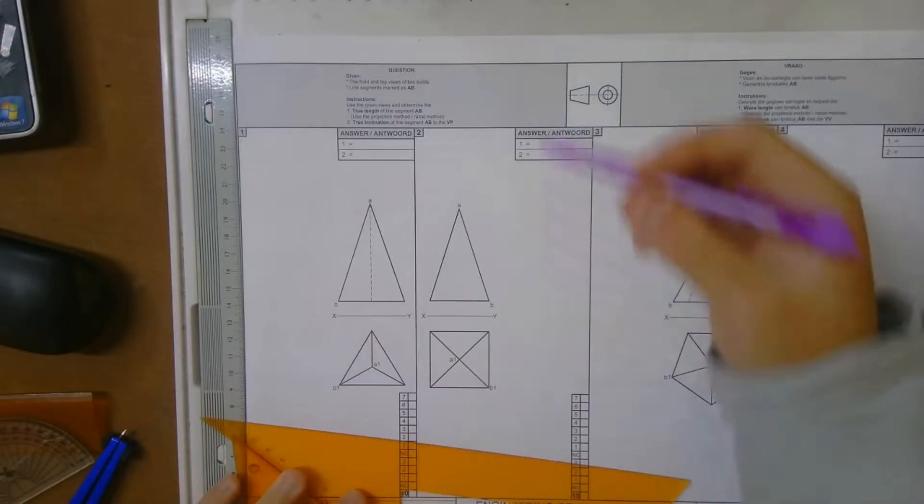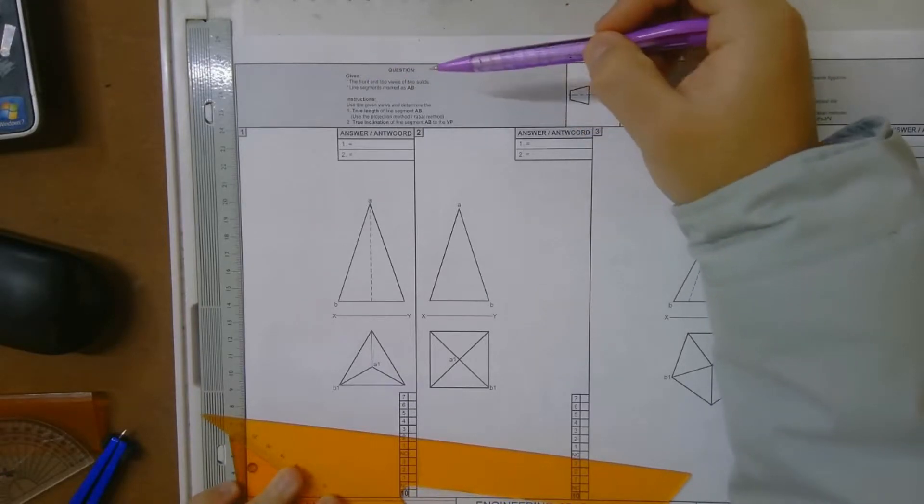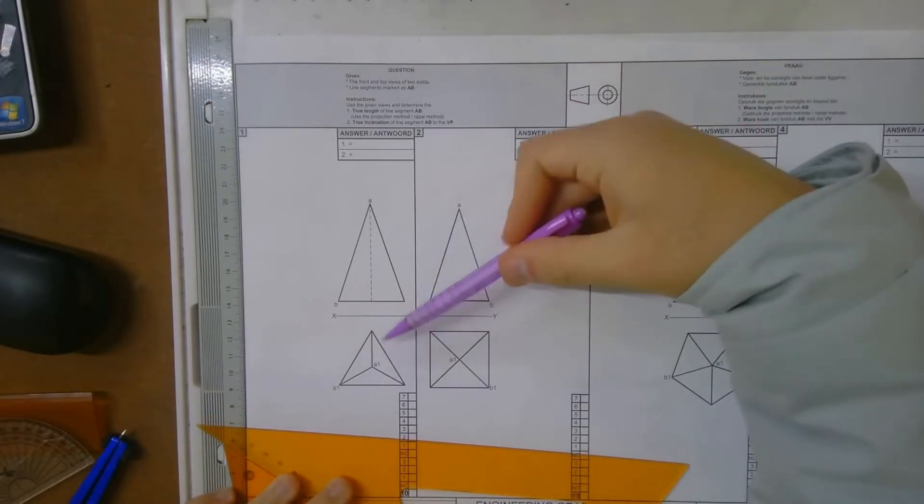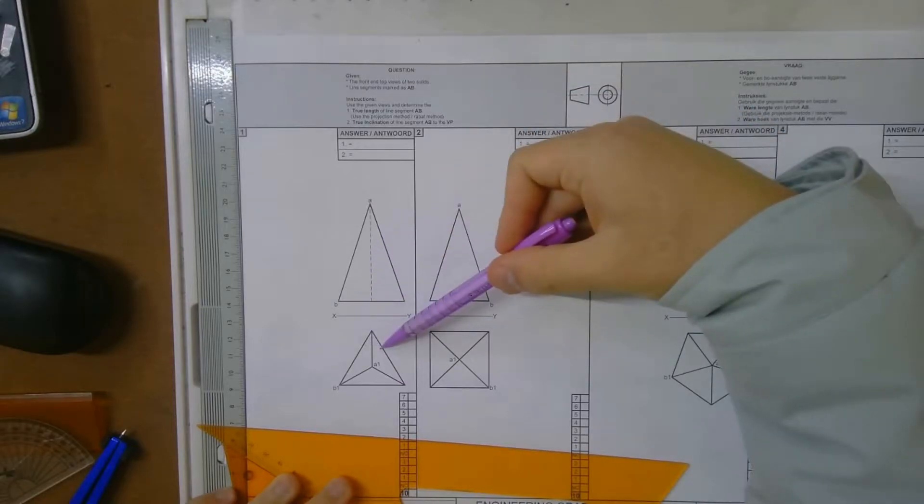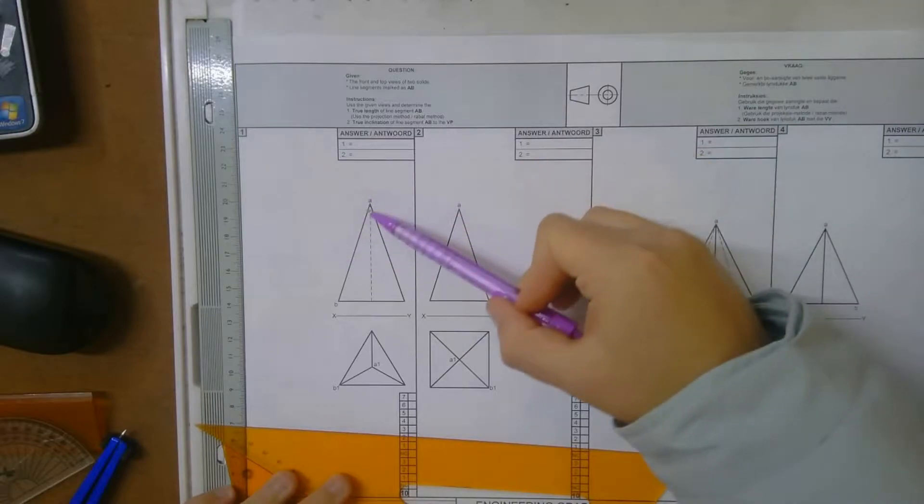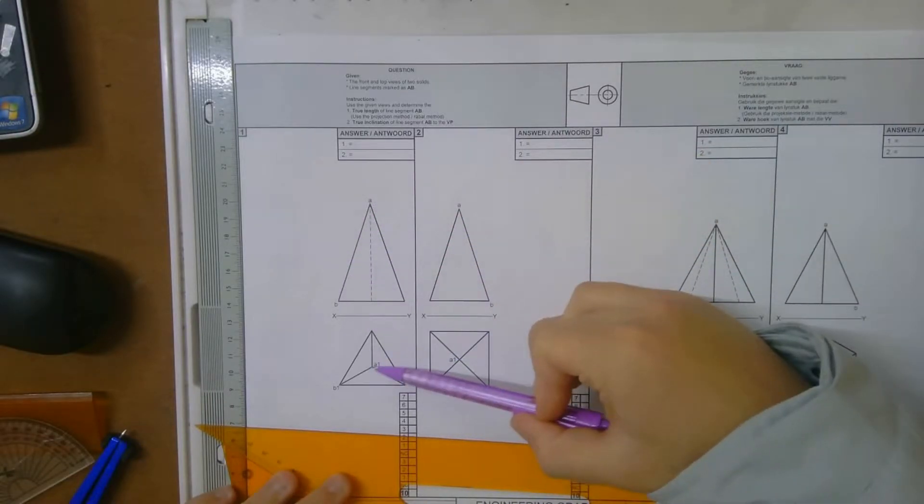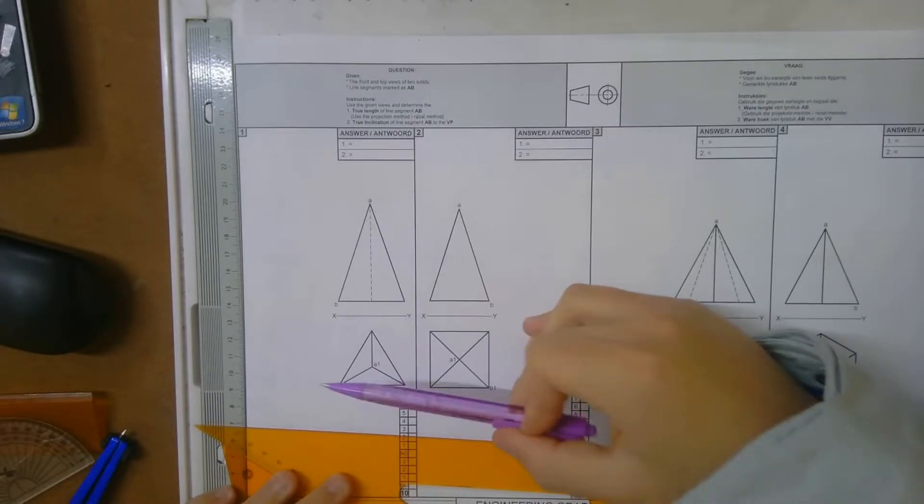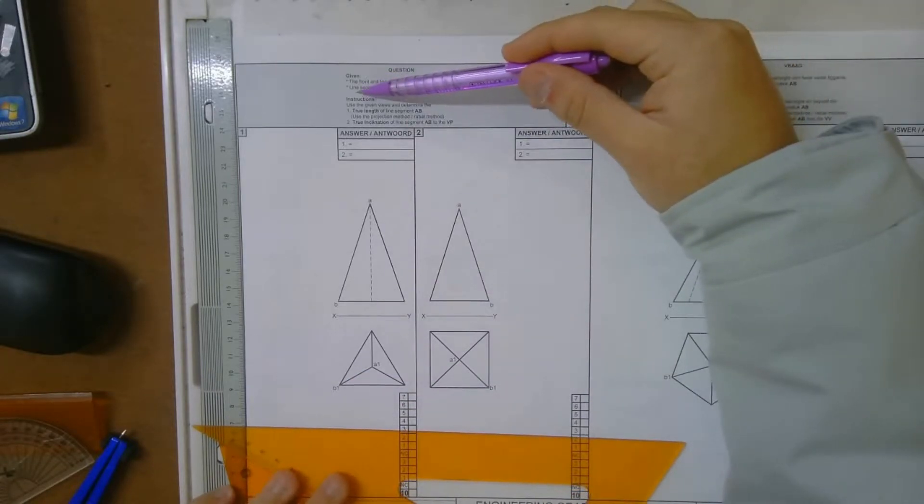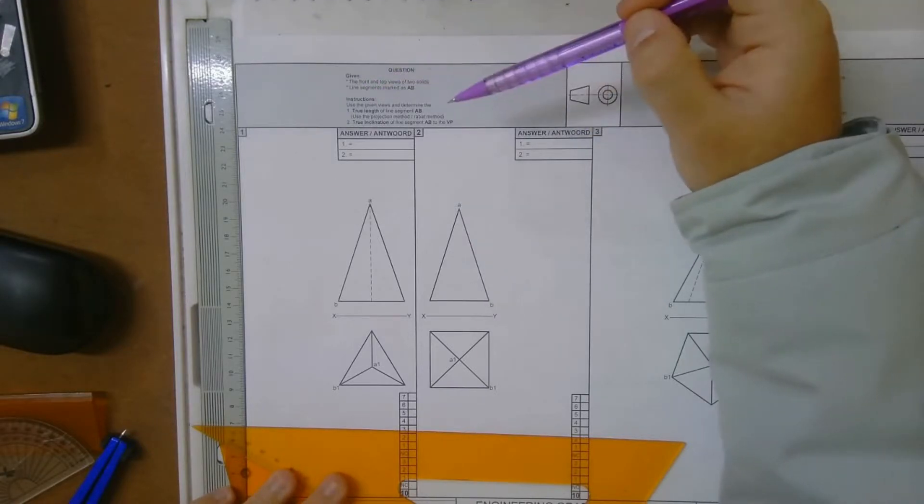What you want to do now is read the question. The question states: given the front and top views of two solids, that's what they've given you - the front and top view. Then line segment marked AB, so line segment AB, that's from the front view, and over here A1 B1, that's what it looks like from the top.